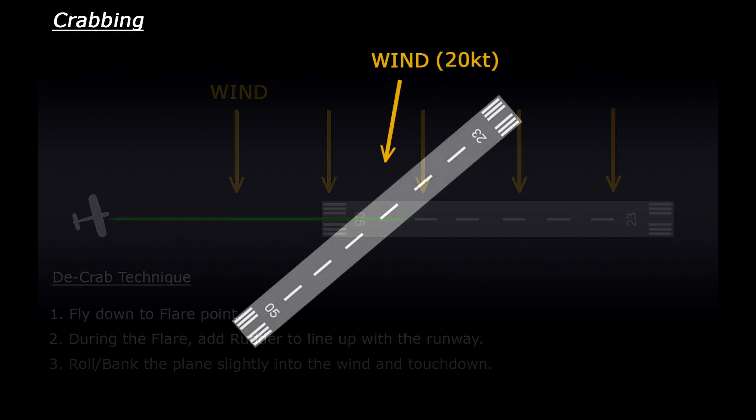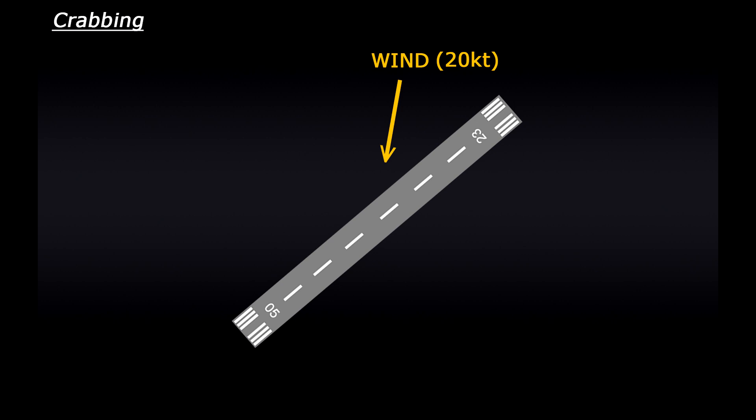Let's look at a quick example at good old Inverness airport. I'll set the sim up so that the wind is blowing in from a direction of 010 at a speed of 20 knots. I'll go in for a landing on runway 5.